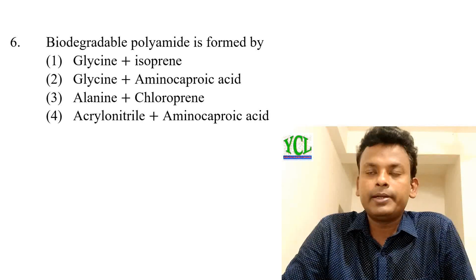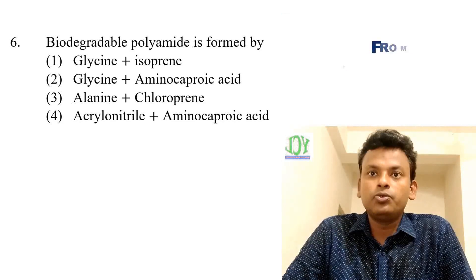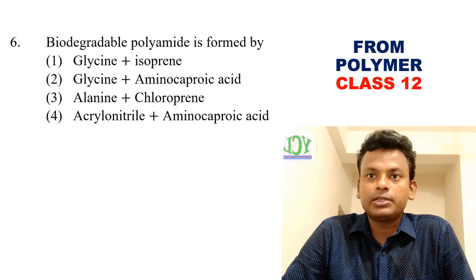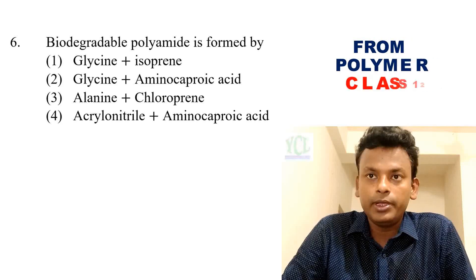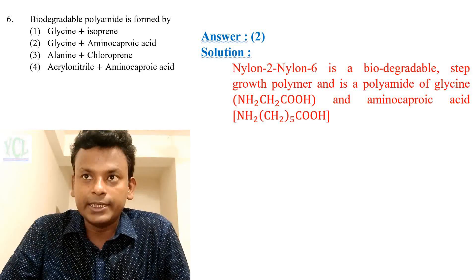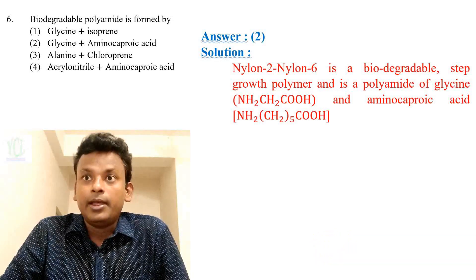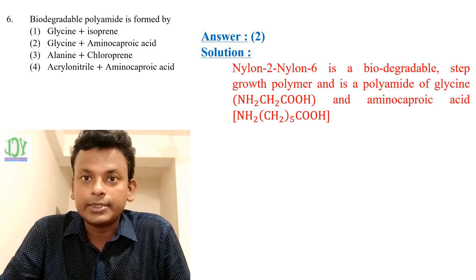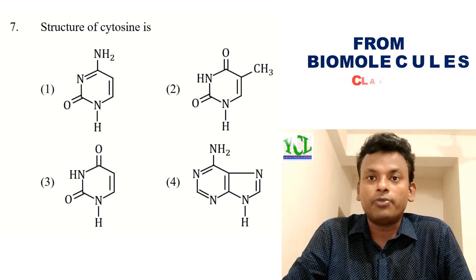Question 6: Biodegradable polyamide is formed by which option? Option 1: glycine + isophthalic acid; Option 2: glycine + amino caproic acid; Option 3: alanine + chlorophen; Option 4: acrylonitrile + amino caproic acid. The answer is option 2. Nylon-2-nylon-6 is a biodegradable step-growth polymer and is a polyamide of glycine and amino caproic acid.